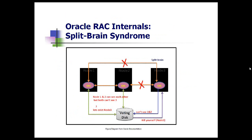The other nodes say: once we don't see node three, we evict it from the cluster because we want to keep the information synchronized. So once node three reads the kill block in the voting disk, it finds that the information has been overwritten, and it will suicide itself — the node will be evicted and rebooted immediately.